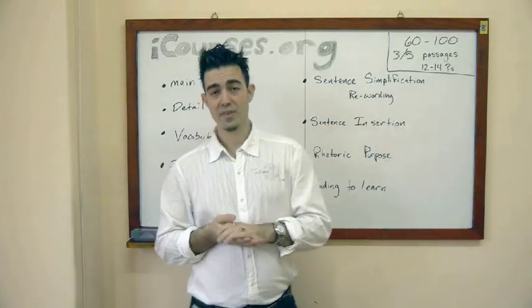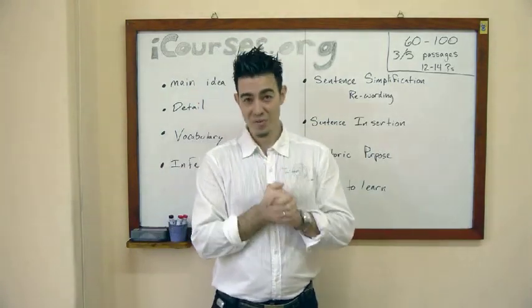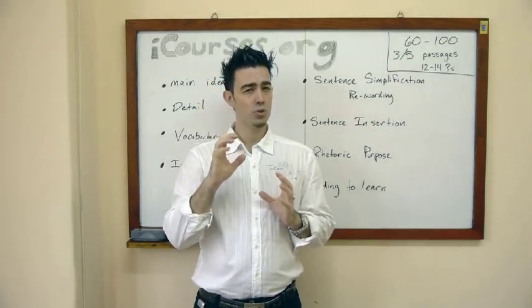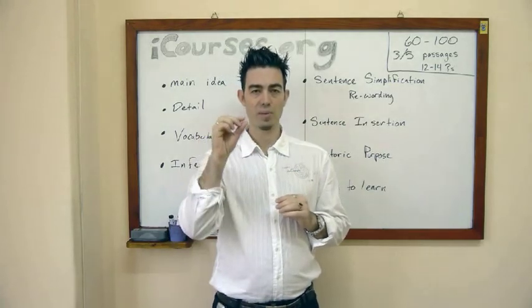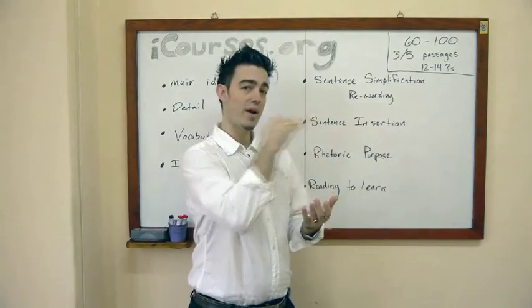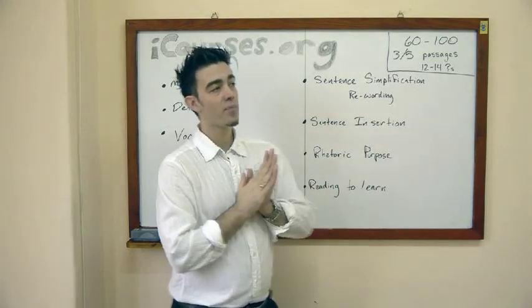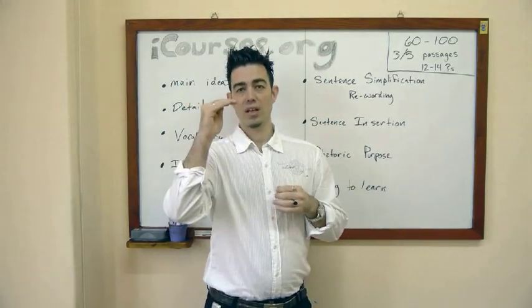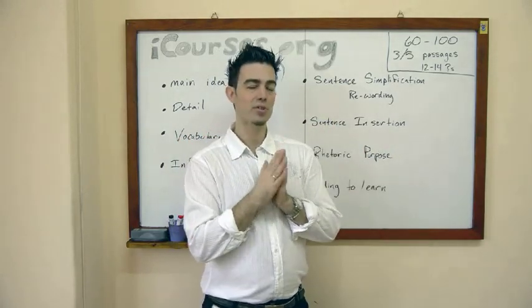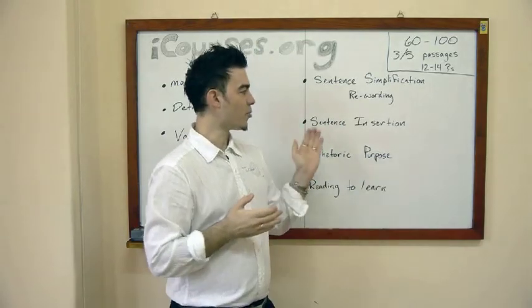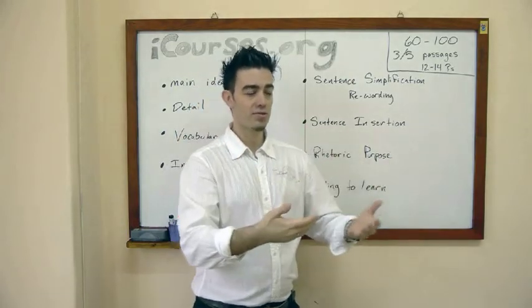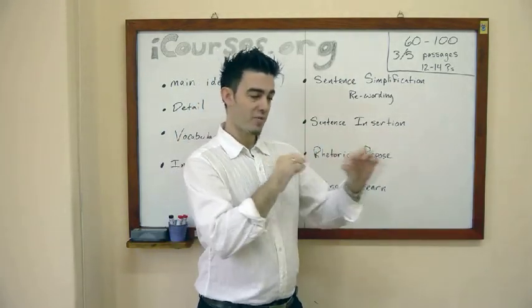Sentence insertion. Now that's one that can be difficult even for native speakers. You'll see on the whole reading passage there'll be about five, usually five, sometimes four, but usually five little boxes where the sentence could go. And then they give you a sentence and they ask you where to put it in the text. Now sometimes, at least two of them, it'll seem pretty obvious that it can't go there. So you can eliminate those two options. The other ones that are a little bit more difficult, you really have to look at things like pronouns.